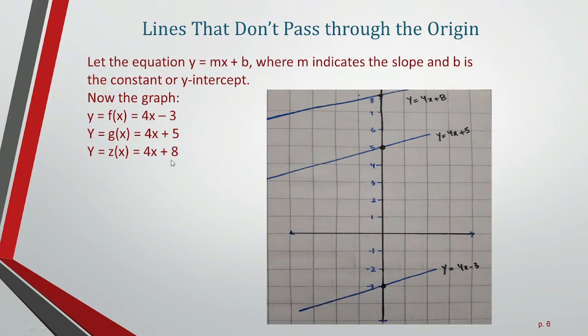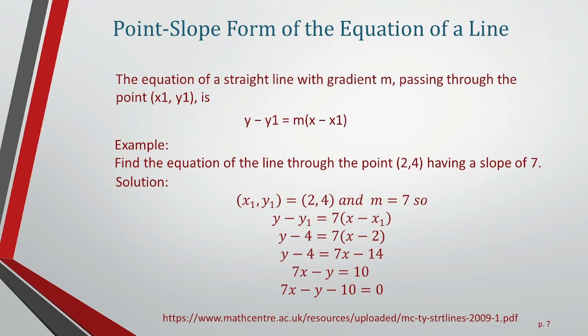Plotting these intercepts (-3, +5, +8) and drawing lines with the same slope of 4. The slope of these three lines is 4.